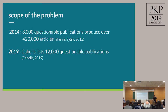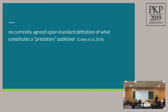Cabells in 2019 lists 12,000 questionable publications. I don't intend to go into the issues of blacklisting, whitelisting, or the different methodologies — that's beside the point. What I'm saying is that as a reasonable proxy, we can assume there are well over half a million articles out there at this point, given it's been five years since the original study.